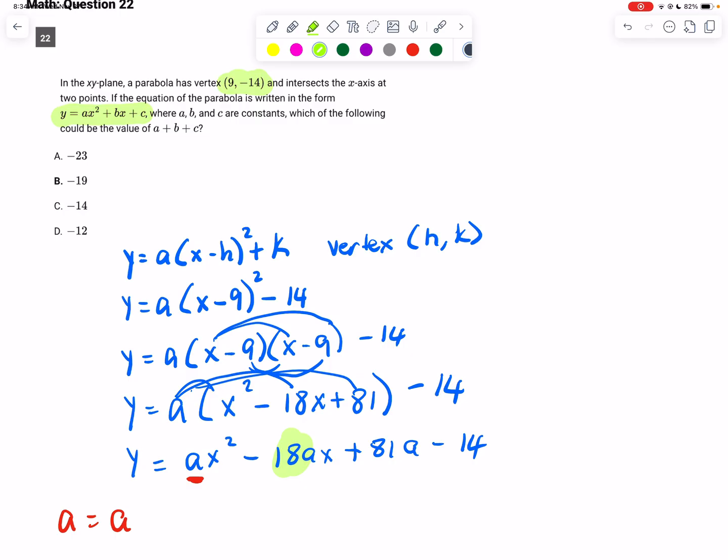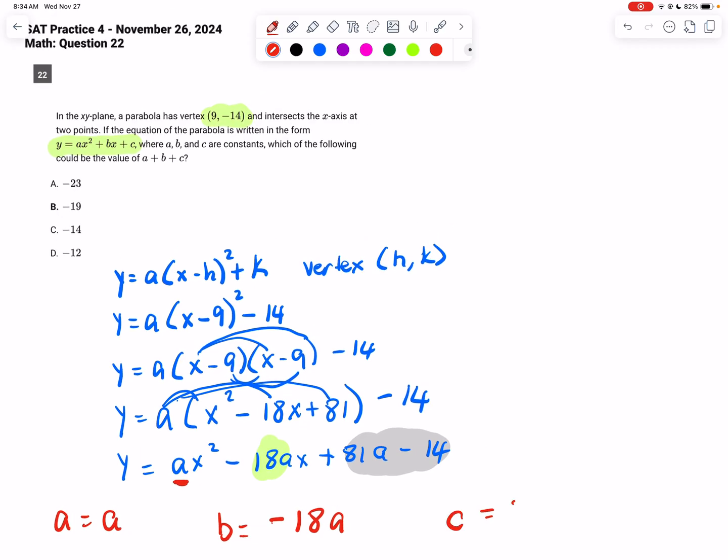So we have that. So or b, everything in front of x is going to be negative 18a. And or c, everything that does not have an x at all is over here, highlighted in gray. So or c is 81a minus 14.